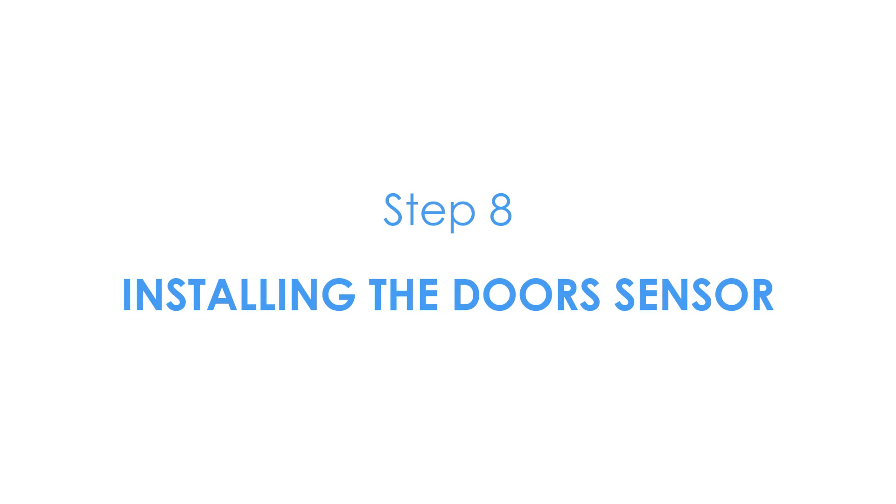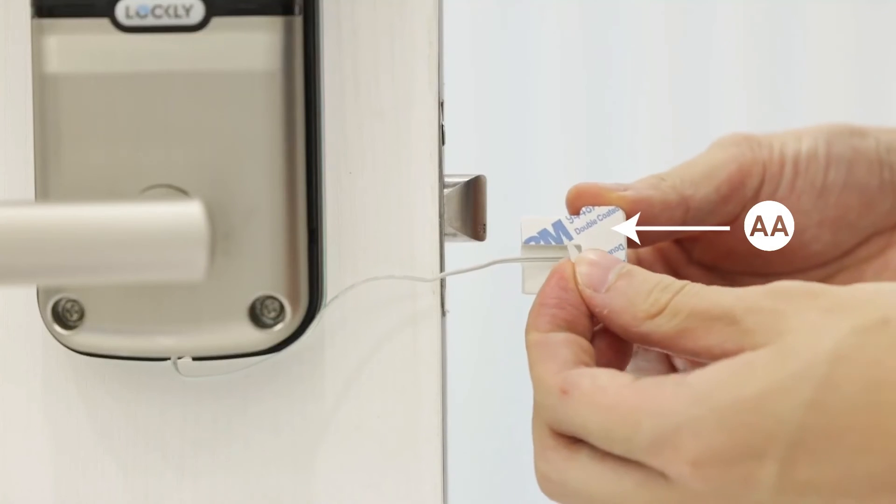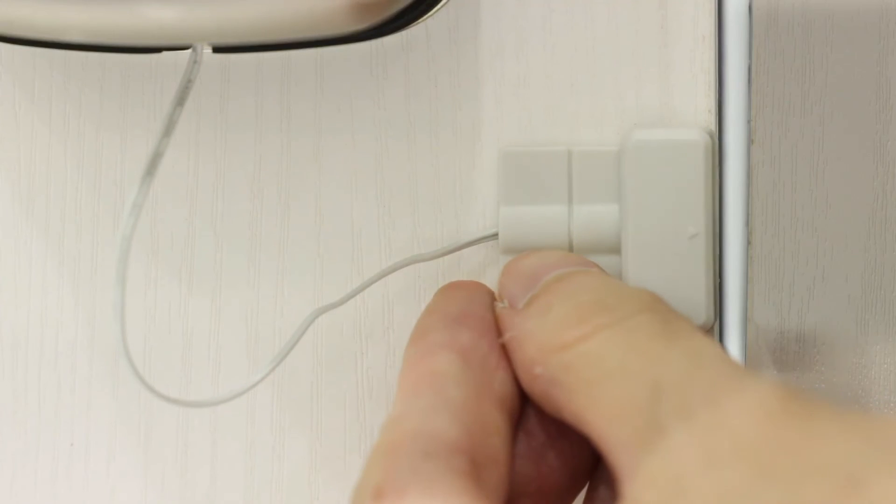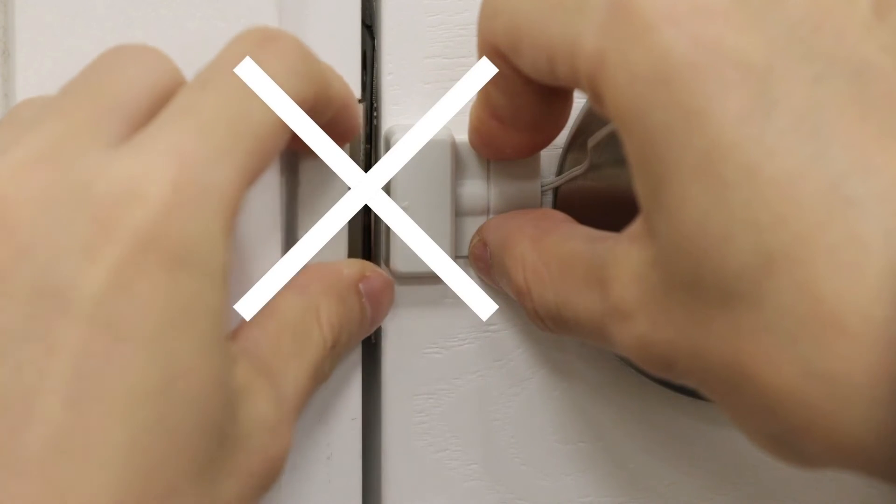Step 8: Installing the door sensor. Peel the paper layer off the adhesives from the back of the wired sensor AA. Position the wired sensor to the edge of the door, avoid the door strike plate. Attach and secure with the adhesives.